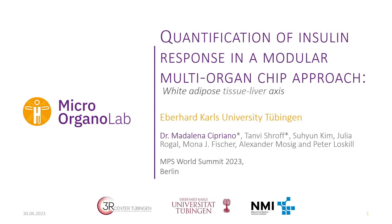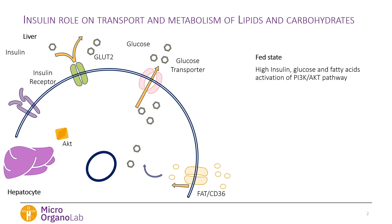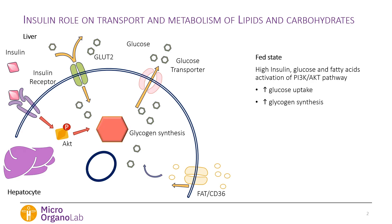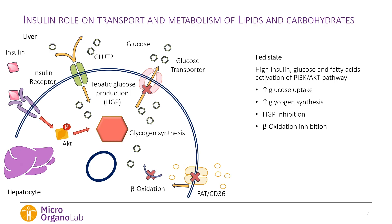We all know why studying insulin response is important. Starting with the hepatocyte, insulin regulation is relevant in a fed state where there is high insulin, high glucose, and high fatty acids availability to the cell. Insulin interacts with the insulin receptor, activates the AKT pathway, which gets phosphorylated, signaling downstream to increase glycogen synthesis and glucose uptake, together with inhibiting hepatic glucose production, and inhibiting beta-oxidation and fatty acid uptake.